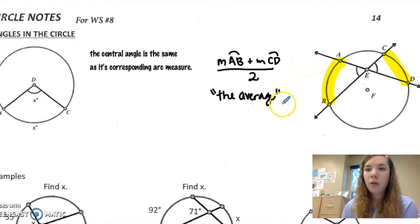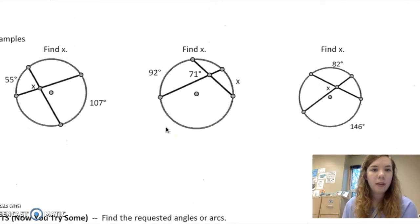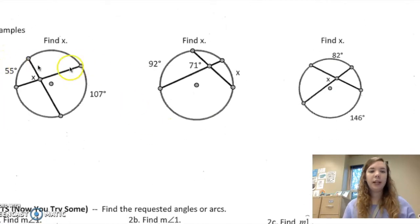of those two, then that is angle E here. So some examples. If I add 55 and 107 and divide by 2, I get 81.